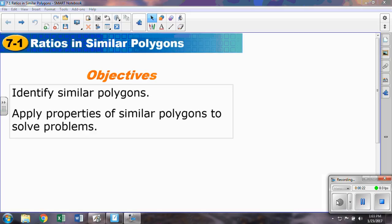Our objectives are fairly simple. If you can look at two polygons, be able to identify are these things similar, yes or no. And also, if they are similar, we'd like to be able to solve some problems related to them being similar.